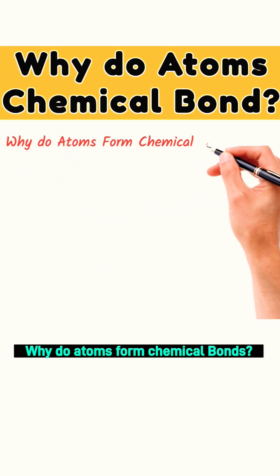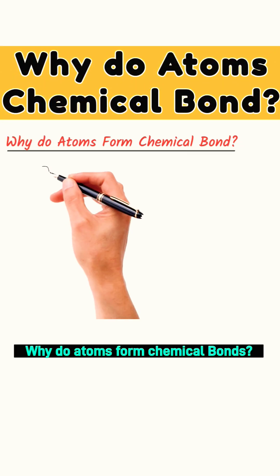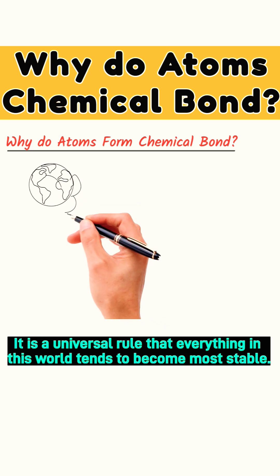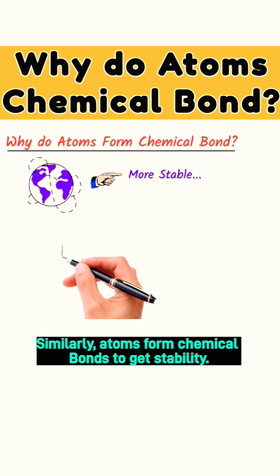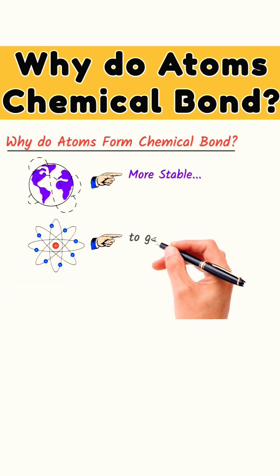Do you know my dear students, why do atoms form chemical bonds? It is a universal rule that everything in this world tends to become more stable. Similarly, atoms form chemical bonds to get stability.